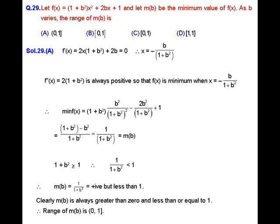Solution of question number 29. In this question we have a real-valued function f defined as f(x) = 1 divided by (1 + b²x² + 2bx + 1), where b is any real number. Given m(b) is the minimum value of this function as b is the variable, we will find the range of m(b), that is the set in which m(b) lies.